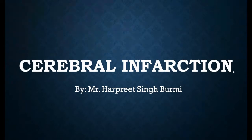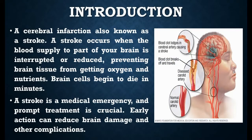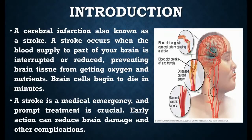This topic for our last chapter is cerebral infarction or stroke. The cerebral infarction, also known as a stroke or ischemic stroke, is a condition which occurs when the blood supply to your brain is interrupted, reduced, or prevented by any circumstances, so the brain is not getting the oxygen and nutrients it needs.